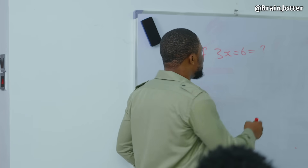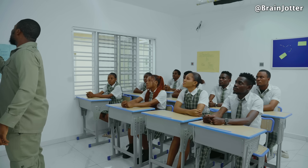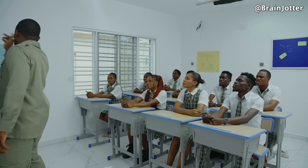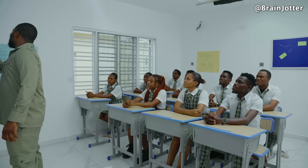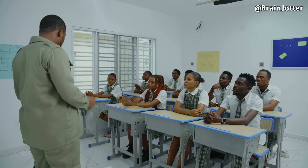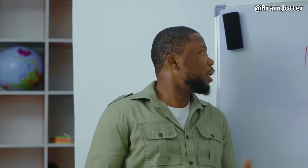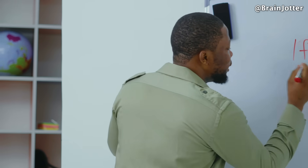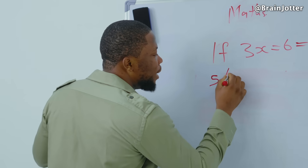So the answer is: 3x is not equal to 6. Simple. Any question? Yes, the next one is very simple. 5 divided by 25 — the answer is equal to 14. It's very simple. Do you understand? 5 divided by 25 is 14.